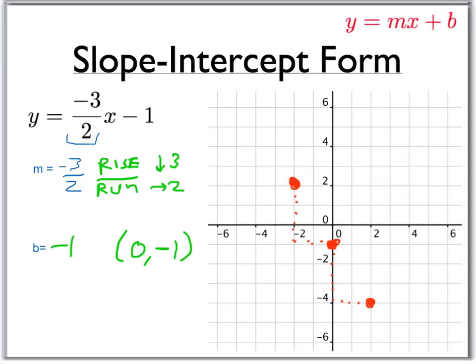And so there we have a couple of points. We see that we're going to make a line that looks a little something like this. And there we go. All that's left to do is show it's a line. We can add little arrows on the end. There we have the line y equals negative 3 over 2x minus 1.